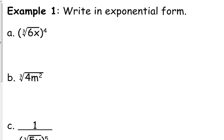We're taking some radical expressions and writing them in exponential form. The way to remember exponential form is it's power over root. If you need help remembering which one comes first, P comes before R in the alphabet, so it's power over root.